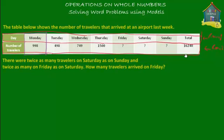Below 'Total' is the number 16,240. What that means is if you add up all the travellers that arrived on Monday, Tuesday, Wednesday, Thursday, Friday, Saturday and Sunday, the total is 16,240. We don't know what the question marks stand for right now, but the total of 16,240 includes those numbers as well, and later we're going to find out what they are.